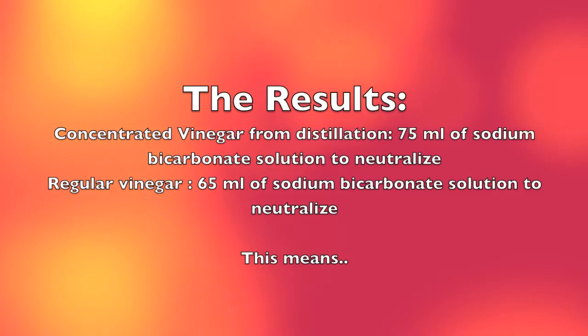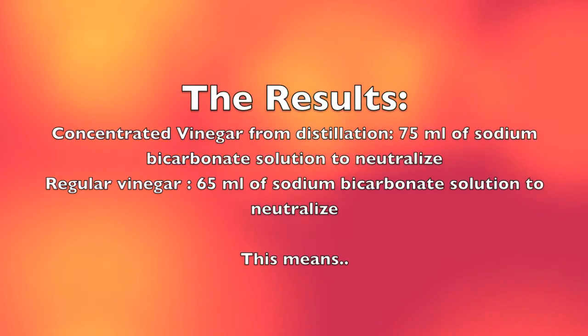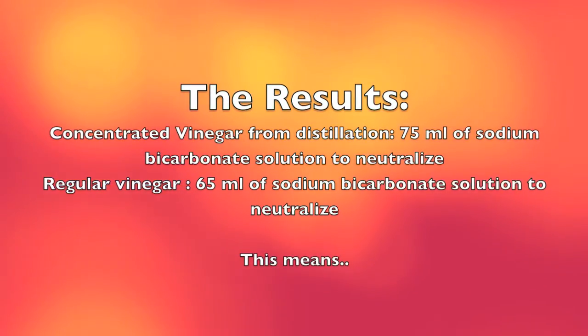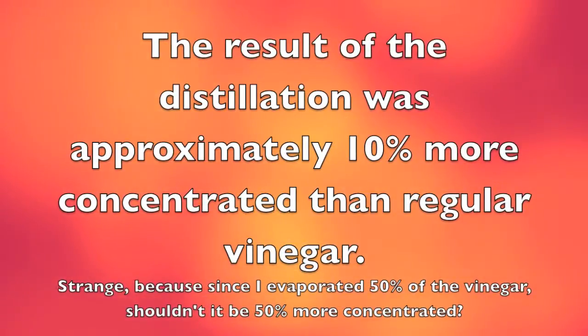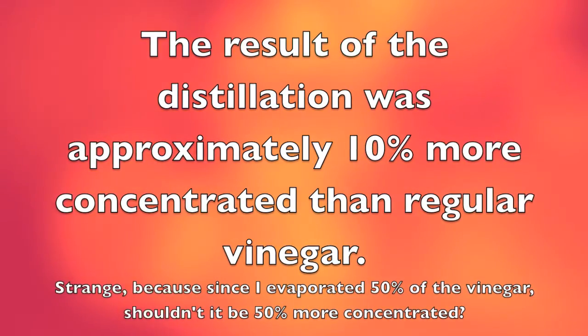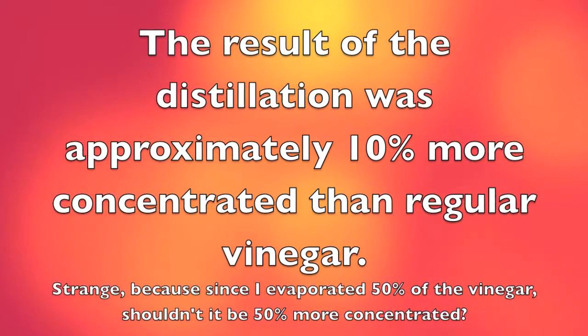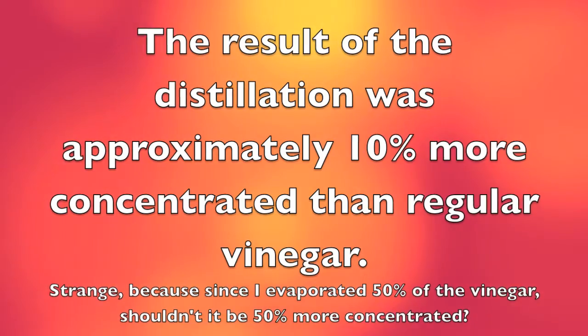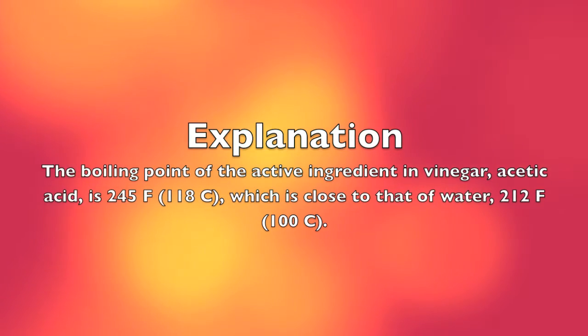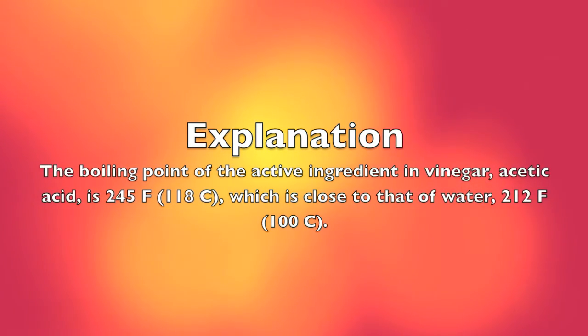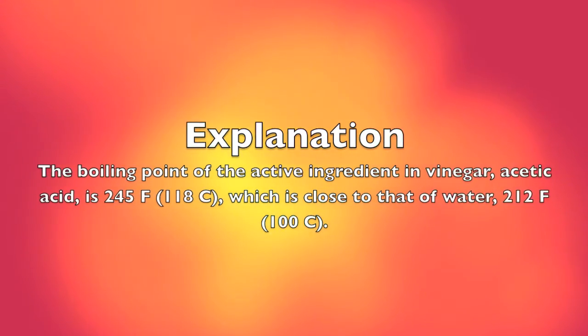Here's the results. The concentrated vinegar took 75 milliliters of sodium bicarbonate to neutralize, while the regular vinegar took 65. This means that it was about 10% more concentrated than regular vinegar. Strange though, because I evaporated 50% of the solution when I distilled it, so shouldn't it be 50% more concentrated? Well, no, because the boiling point of acetic acid is really close to that of water, so some of the acetic acid boiled away also. Pretty interesting result.